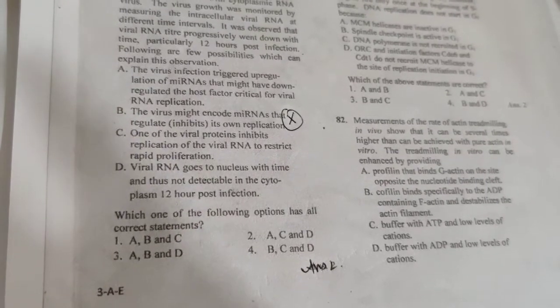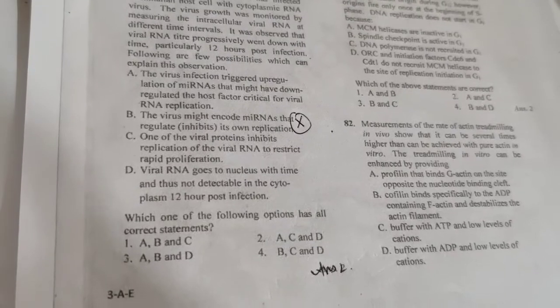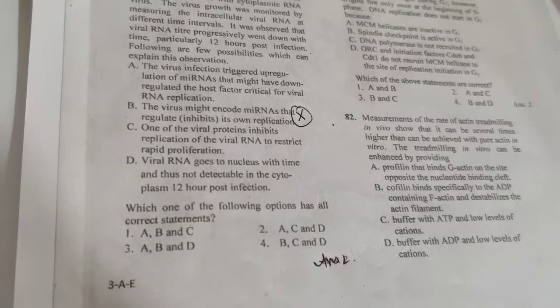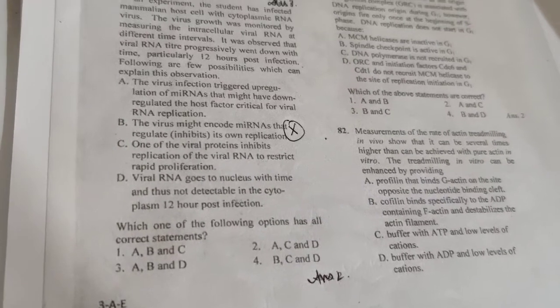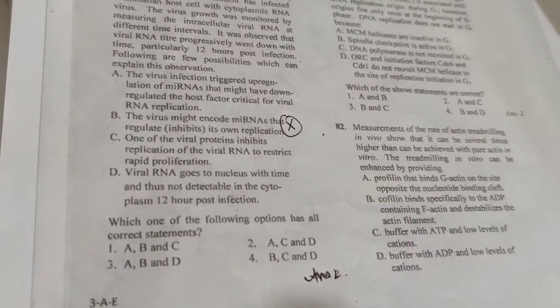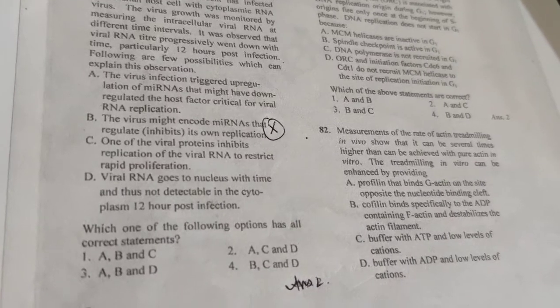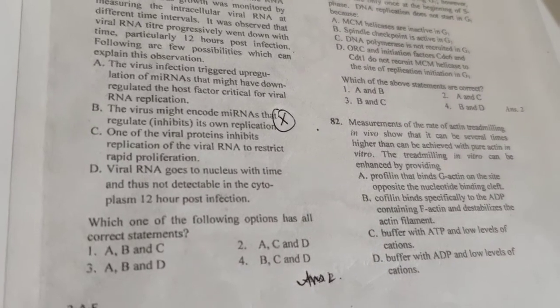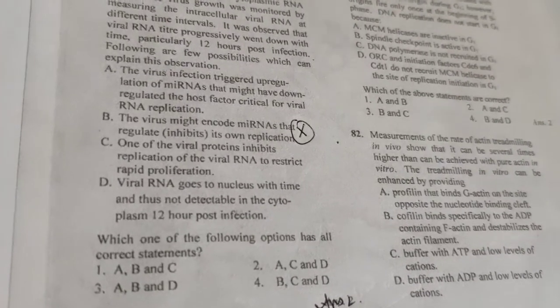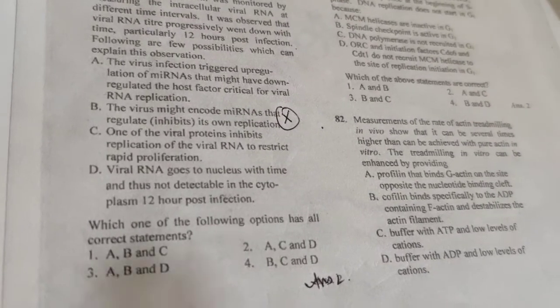One of the viral proteins inhibits the replication of the viral RNA to restrict rapid proliferation. In this statement, viral RNA inhibits viral RNA, which I have told you that miRNA is binding with RNA and further degrades its proliferation. Then D states that viral RNA goes to the nucleus with time and thus not detectable in the cytoplasm 12 hours post-infection. This can happen because viral RNA needs further modification, so viral RNA can go to the nucleus.